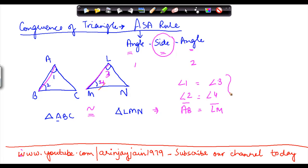So if these three properties hold true, then triangle ABC is congruent to triangle LMN.